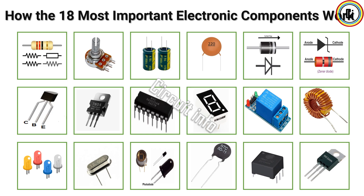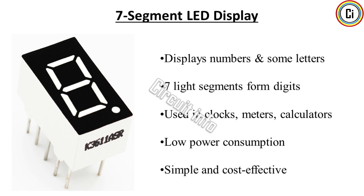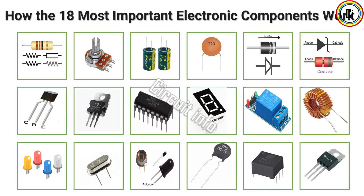A 7-segment LED display is an electronic display device used to show decimal numbers and limited characters. It consists of 7 LEDs arranged in a figure-8 pattern, where each segment lights up individually to form numbers. These displays are widely used in clocks, calculators, meters, and other devices requiring simple numeric output. They are easy to interface with microcontrollers, have low power consumption, and provide clear visibility even in low-light conditions. Their simplicity and reliability make them a popular choice for numeric displays in electronics.